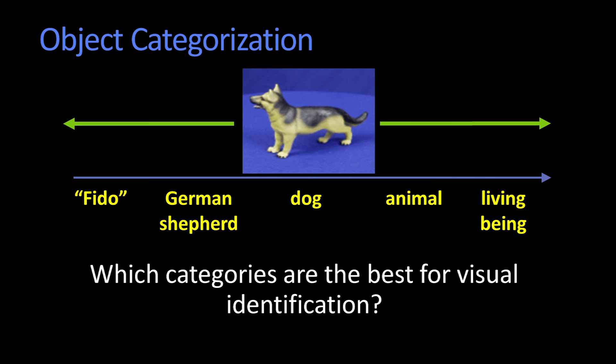So there's this question: what categories are best for visual identification, or which ones do we agree upon?